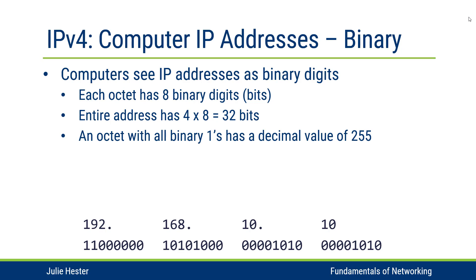If we have an octet with all binary ones, that's going to have the decimal value of 255. So each decimal value will only range from zero to 255. When we are converting binary digits or decimal to binary, we are going to look at digits in groups of eight — we're not really concerned with converting decimal values greater than 255.